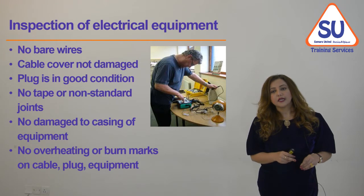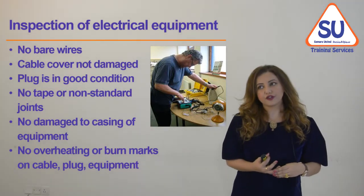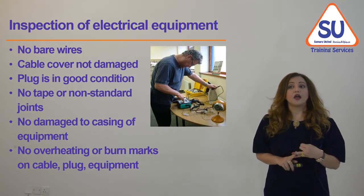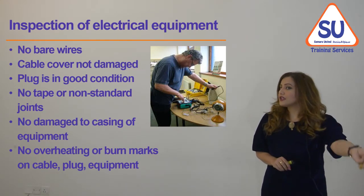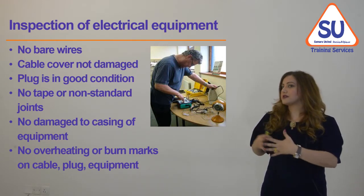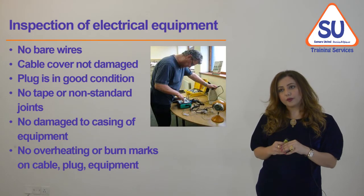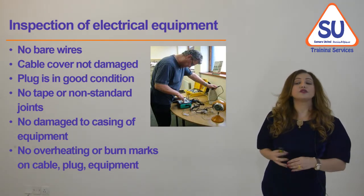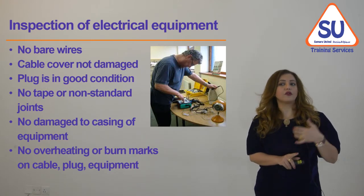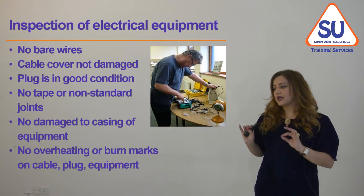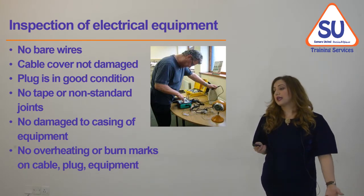For the inspection of electrical equipment, here is a simple checklist. We need to check that there are no bare wires, that cable covers are not damaged anywhere, that plugs are in good condition — plugs are often forgotten but are a main cause of failures and fires. Check there is no tape or non-standard joints in the equipment or cables, no damage or signs of damage to the casing, and no signs of overheating such as burn marks on cables, plugs, or the equipment. If any of these signs are noticed, do not use the equipment — take it for maintenance and checking before using it again, if it can be used again.